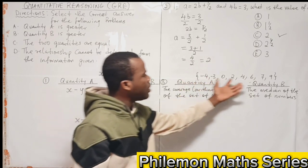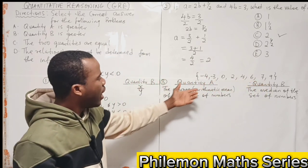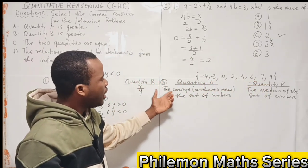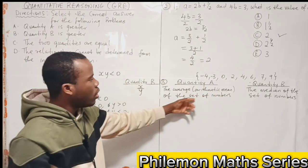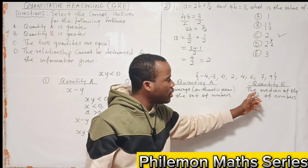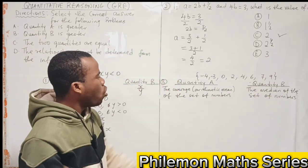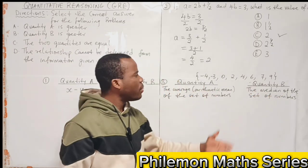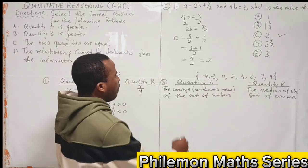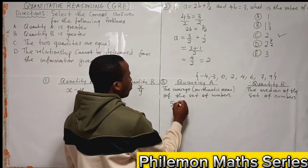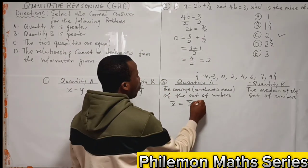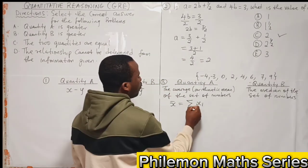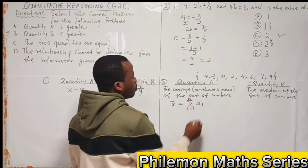Now for the third problem, if you are given this set of numbers, quantity A is the average or arithmetic mean of the set of numbers, and quantity B is the median of the set of numbers. What is the arithmetic mean of the set of numbers? Remember, arithmetic mean or the average is the sum of the numbers divided by the number of numbers we have in the set.